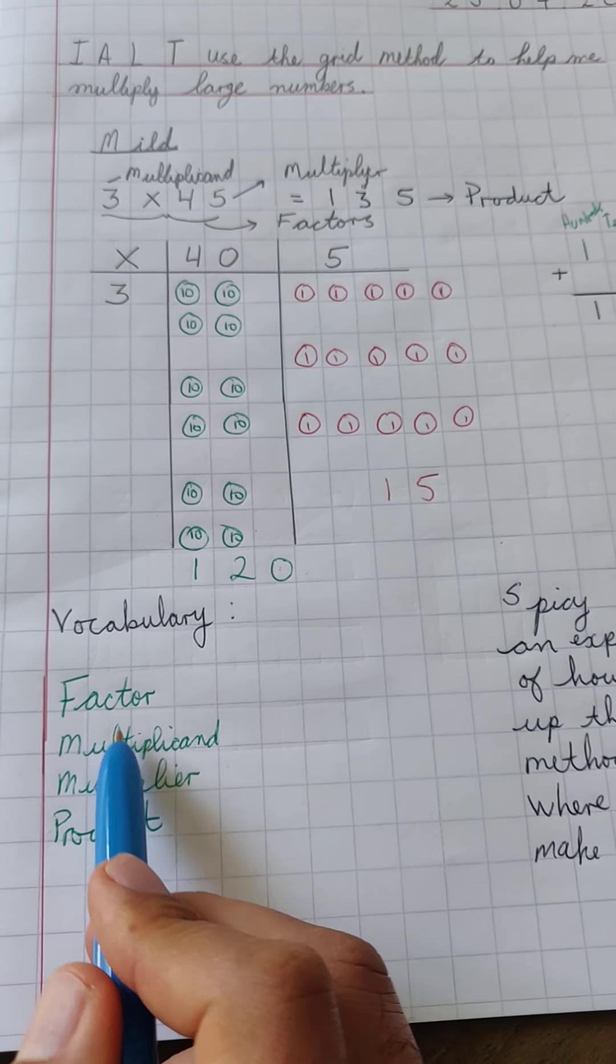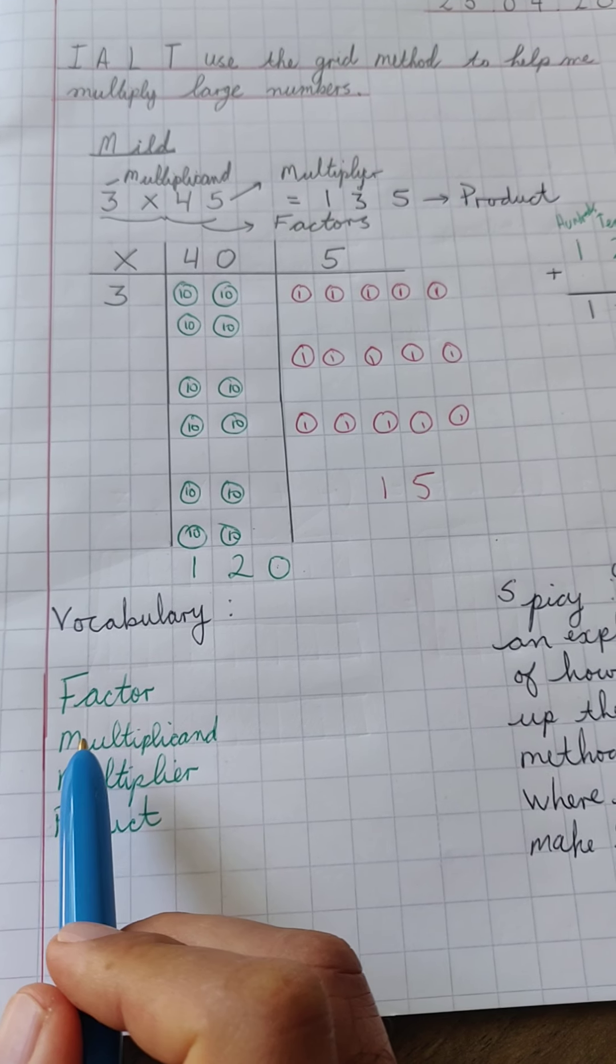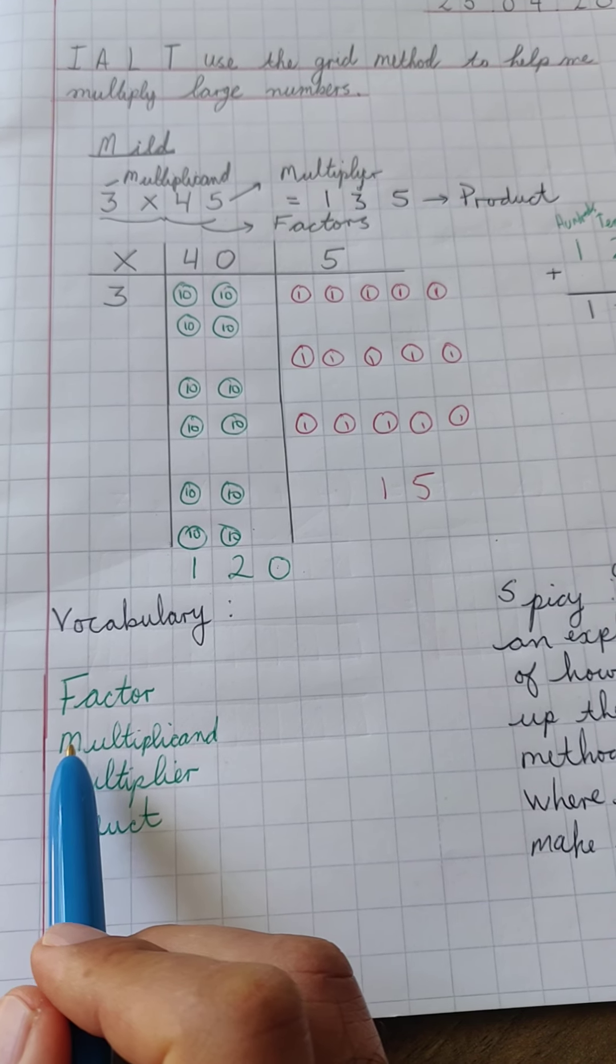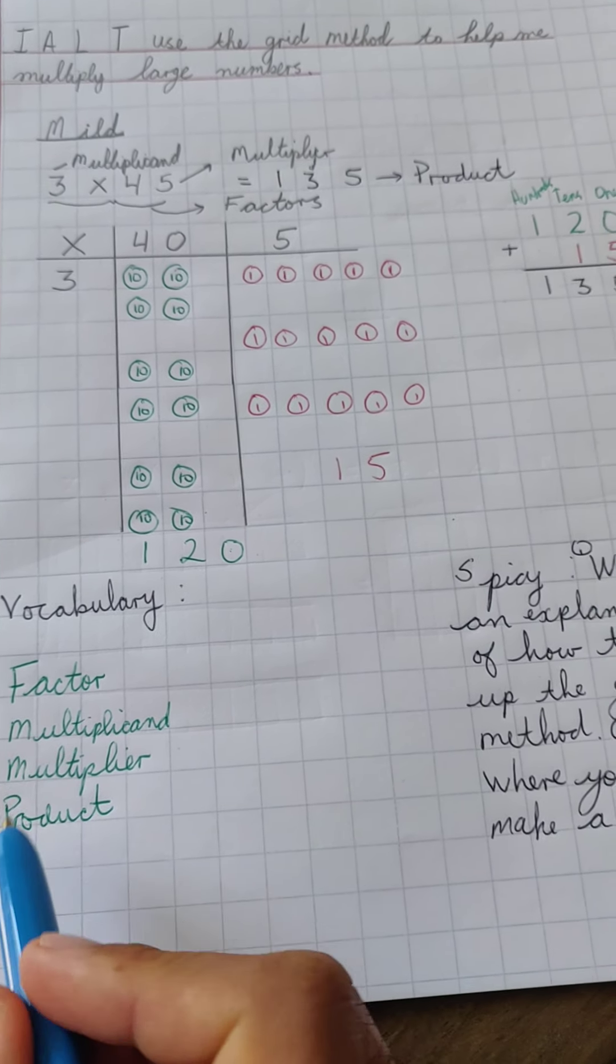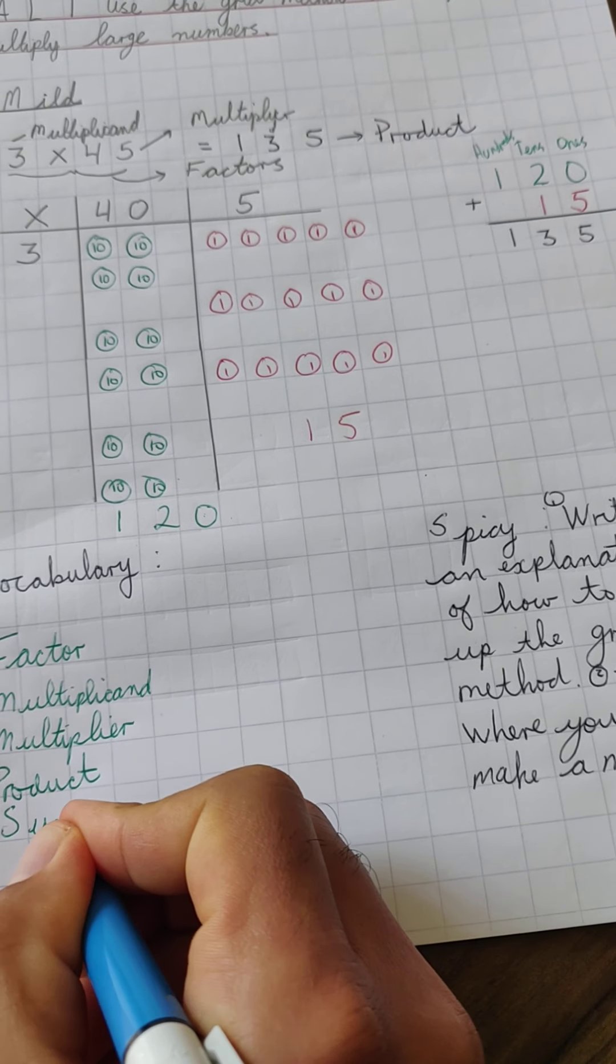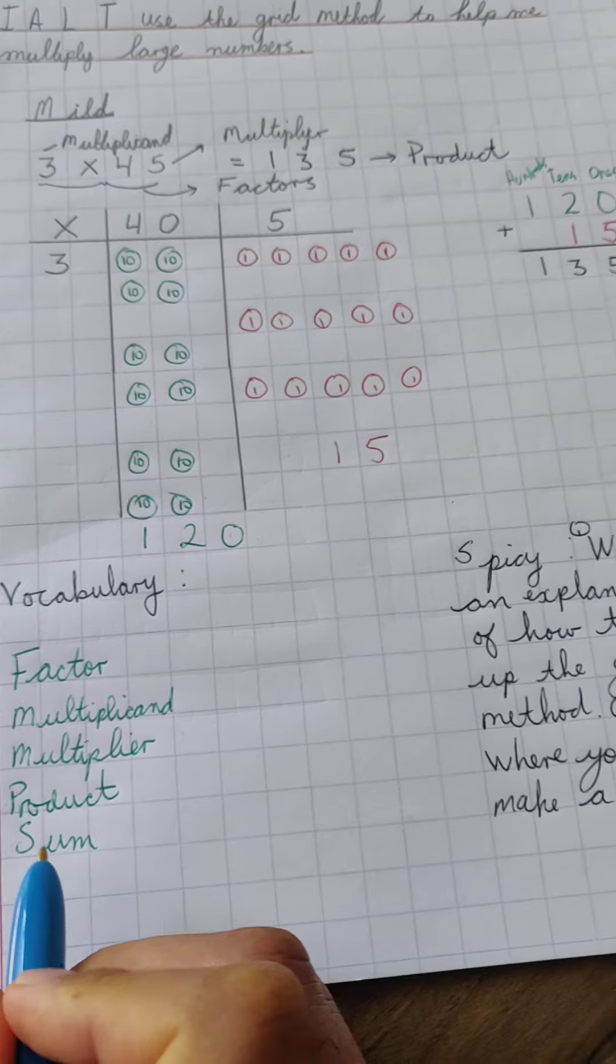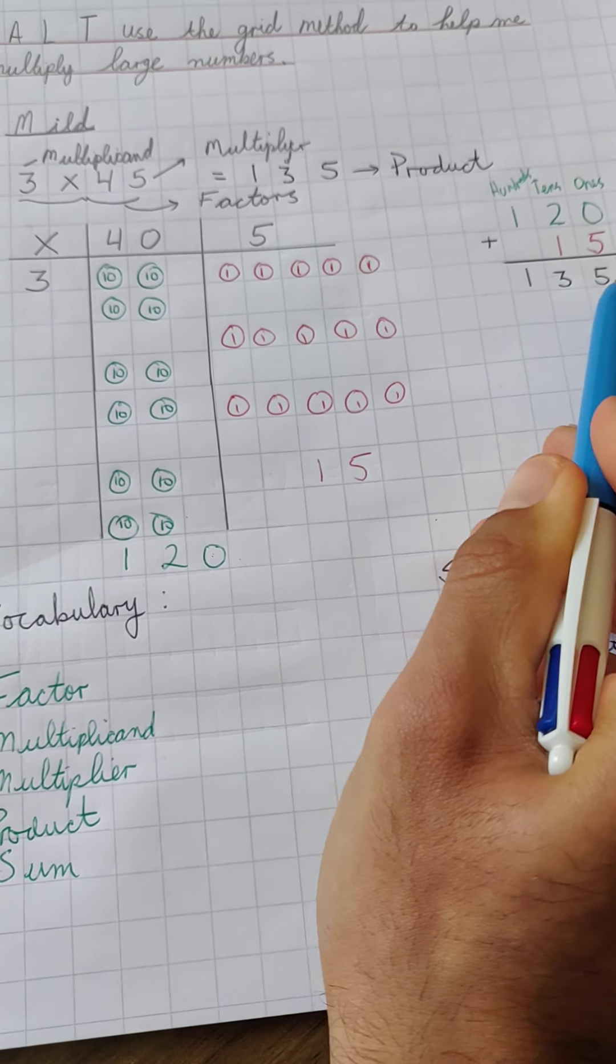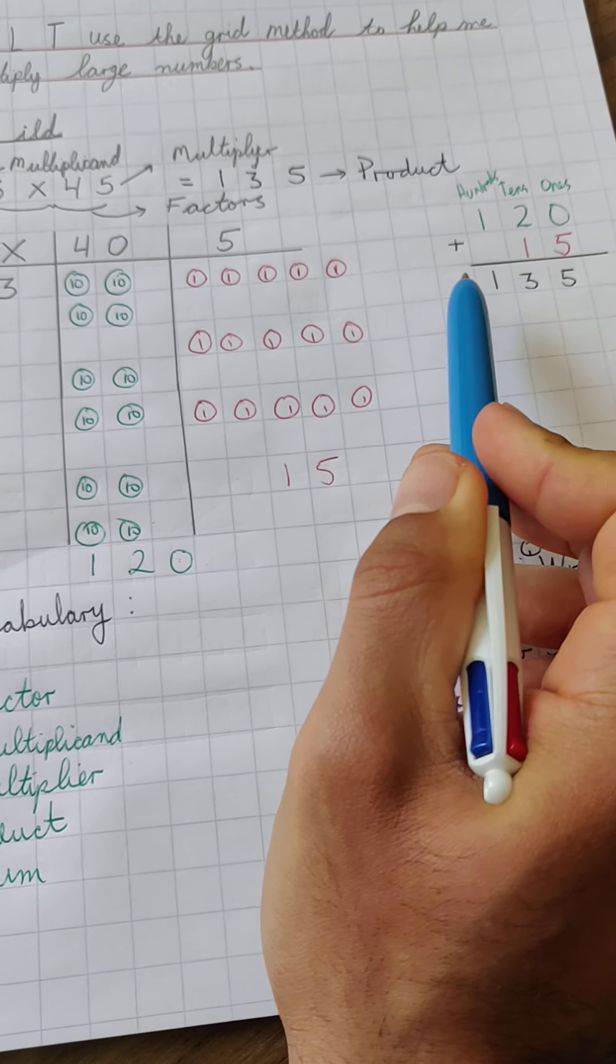So write an explanation as to how you set this up. And also in your explanation, I want you to use all of these terms. Now you can select to use factors for multiplicand and multiplier or you can just use the more precise vocabulary, which is multiplicand and multiplier and product. And one that I forgot to write down is sum. Again, the sum, just a reminder, is the answer to an addition question, to an addition calculation.